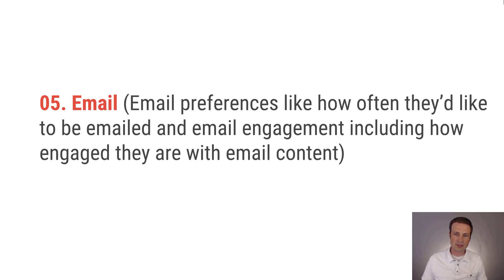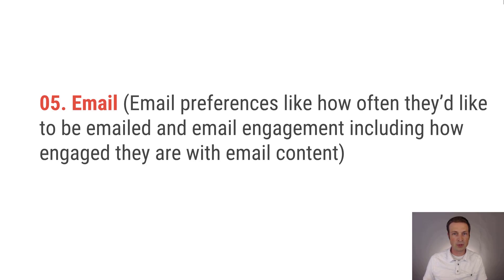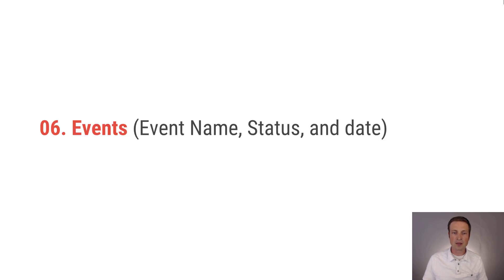Number five is email, which has to do with email preferences. Not everyone uses this, but some people have an email preference center that allows contacts to choose whether they want emails weekly, monthly, or daily. Having an email category for those tags specifically is a really good idea. Number six is events — if you're doing a lot of events, this is a great category so anything event-related has its own tag group.